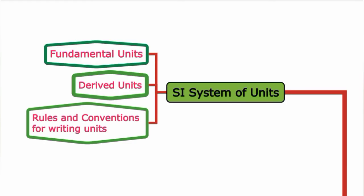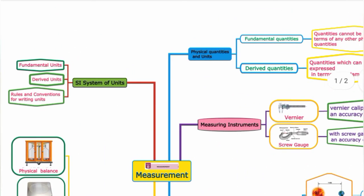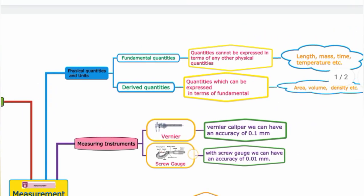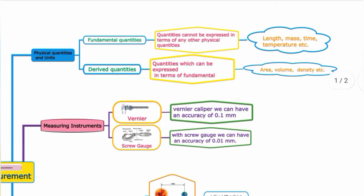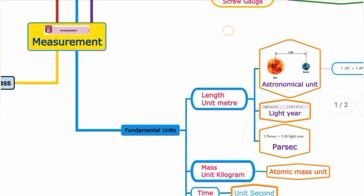Derived units include meter squared for area, meter cubed for volume. Other derived units include Newton, Henry, Ampere, and Watt.